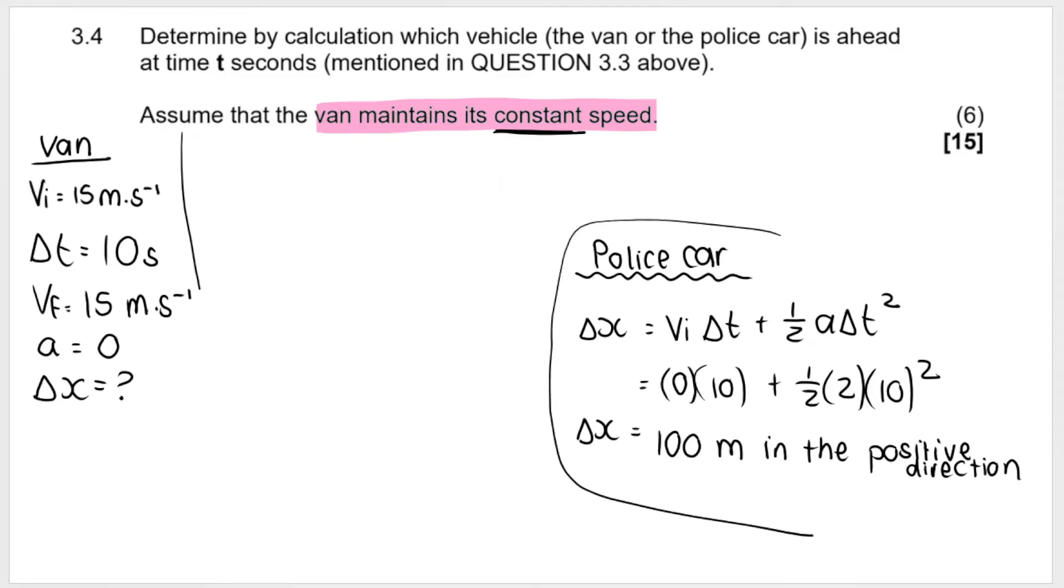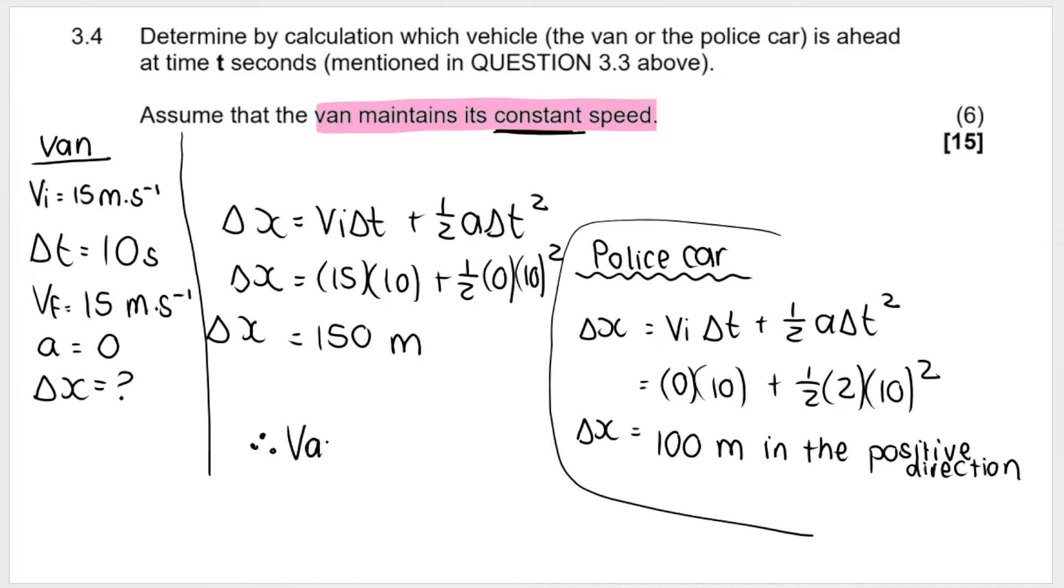For the van, I can use the same formula. It is good to write it out again, even though you've already written it over here. My initial velocity is 15. Time is 10 seconds. Remember, acceleration is zero for the van. It's not speeding up, it's not slowing down, and time again is 10 seconds. Therefore, my displacement for the van is 150 meters. Therefore, we need a conclusion. You can't just give me the calculations. They say which vehicle is ahead. So you say, therefore, the van is ahead.